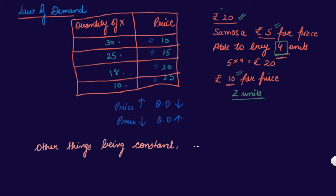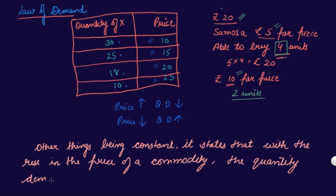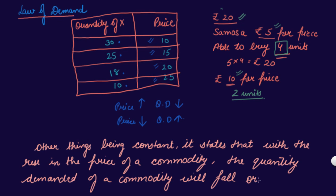The Law of Demand states that with the rise in the price of a commodity, the quantity demanded will fall, or vice versa. Vice versa means if the price falls, the quantity demanded rises. So this is your Law of Demand.